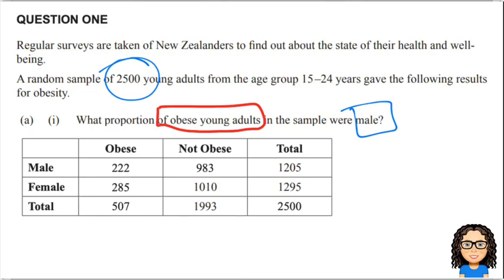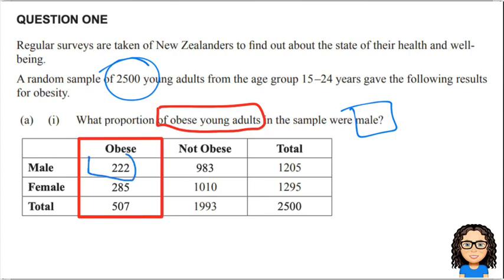Okay, so there's two parts to this. We first want to look at the proportion of obese young adults — so just those who are obese. And within that category, we want to look for how many of those were male. So this is a conditional probability. What we want to find here is the probability of being male given that somebody is obese.